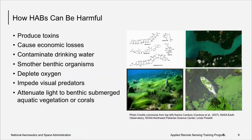We also discussed ways in which algal blooms can be harmful, including when they produce toxins, cause economic losses, contaminate drinking water, smother benthic organisms, deplete oxygen causing hypoxic zones, impede visual predators, and attenuate light to benthic organisms. While all of these are harmful, it is the toxin-producing HABs that often cause the most urgent response by natural resource managers, including shutting down drinking water supplies and closing fisheries so toxins do not vector through the food web and harm human health.